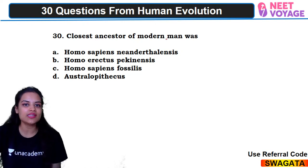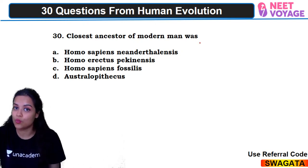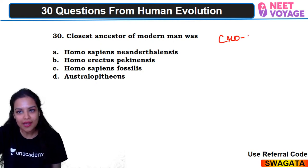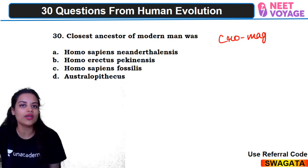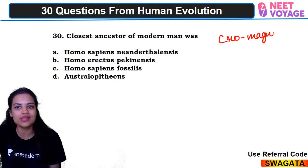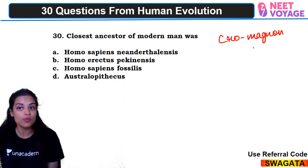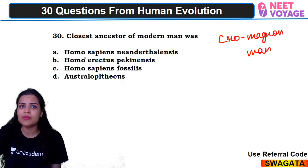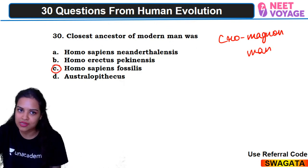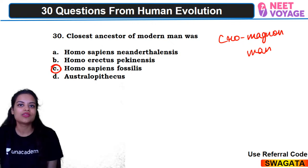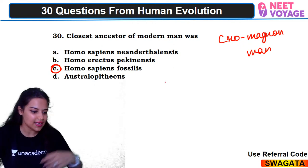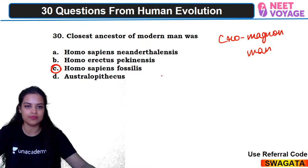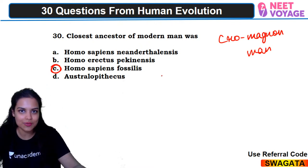Thirtieth question: the closest ancestor of modern man was whom? Modern man is Homo sapiens sapiens — that evolved from Cro-Magnon man, i.e., Homo sapiens fossilis. So C would be the right answer. Ram Prasad answered correctly.